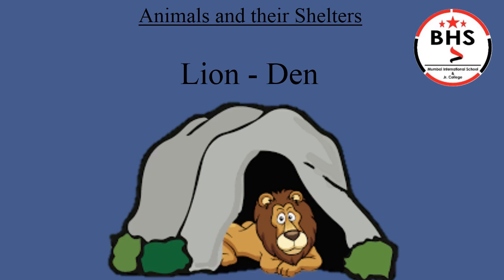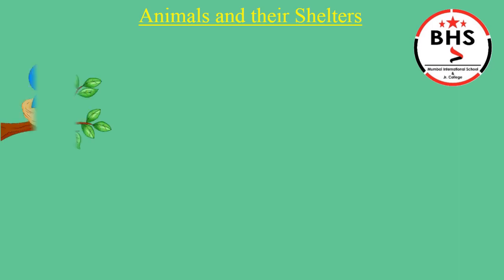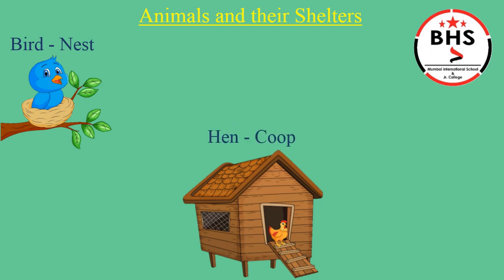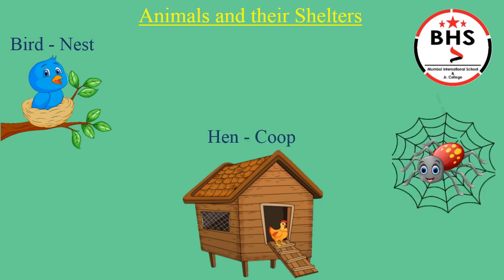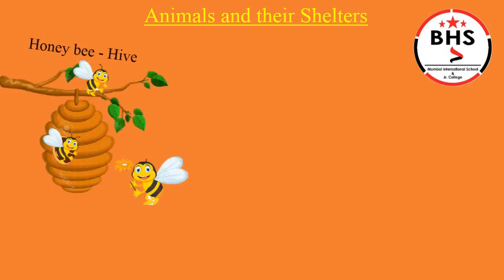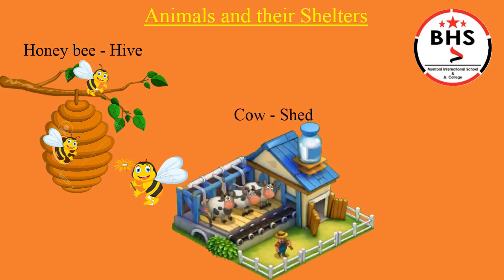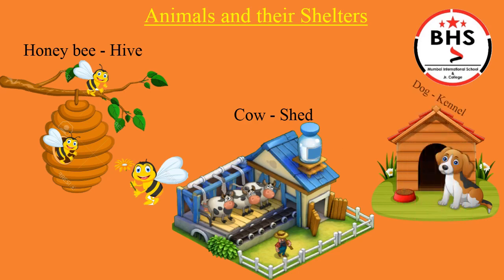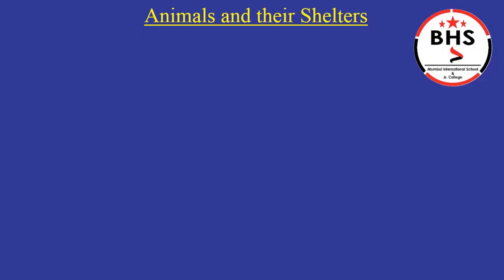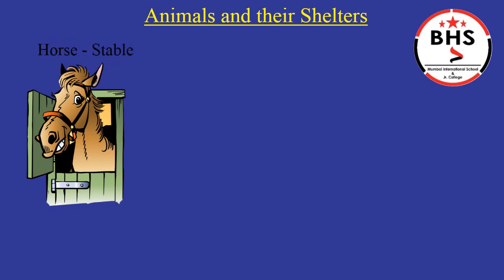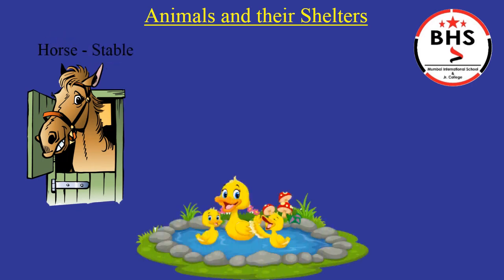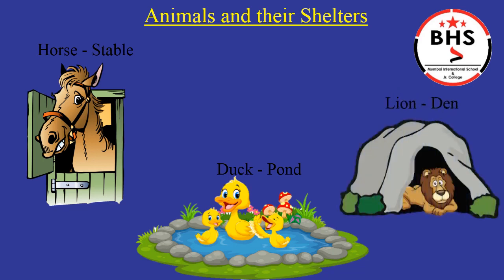We will revise it one more time. The house of bird, bird lives in a nest. The house of hen, hen lives in a coop. Dog lives in a kennel, horse lives in a stable, duck lives in a pond, lion lives in a den.